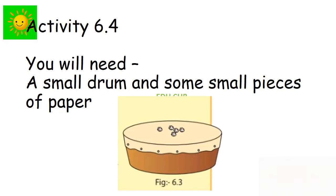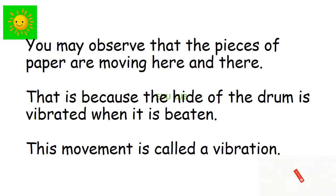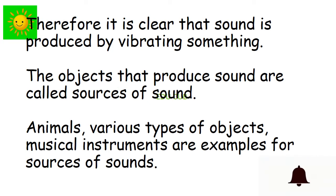Let's do this activity to feel how sound is produced. We need a small drum, small pieces of paper. Keep the small pieces of paper on the drum and play it. Observe what's happened to the pieces of paper when the drum is beaten. You may observe that the pieces of paper are moving here and there. That is because the hide of the drum is vibrated when it is beaten. This movement is called a vibration. Therefore, it is clear that sound is produced by vibrating something.